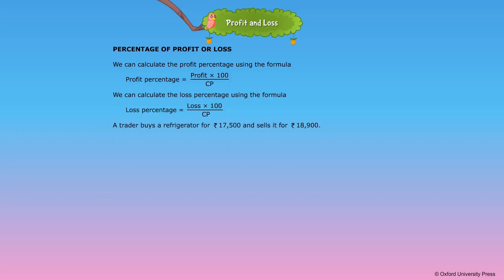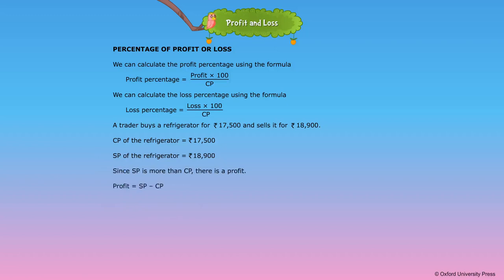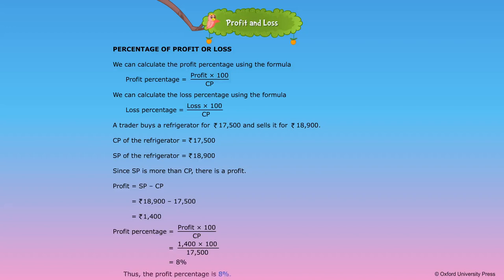A trader buys a refrigerator for Rs. 17,500 and sells it for Rs. 18,900. Cost price = Rs. 17,500; Selling price = Rs. 18,900. Since SP is more than CP, there is a profit. Profit = Rs. 18,900 − Rs. 17,500 = Rs. 1,400. Profit percentage = (1,400 × 100) ÷ 17,500 = 8%. Thus, the profit percentage is 8%. Thank you.